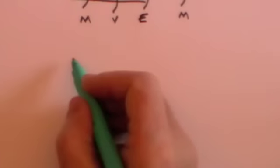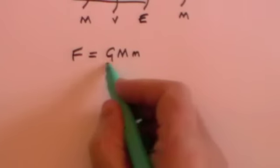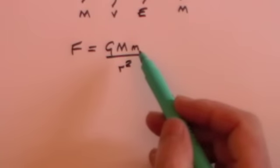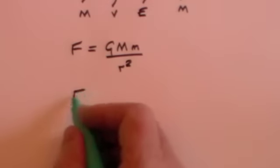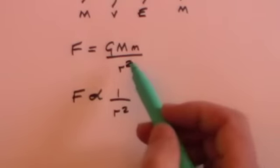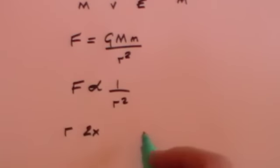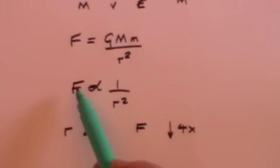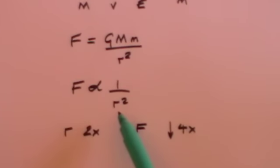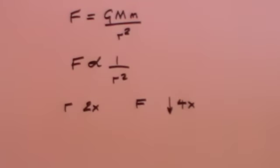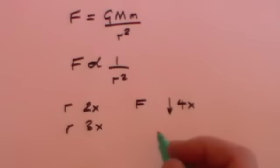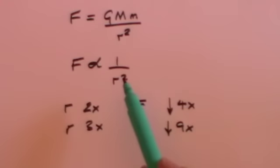I just want to remind you again of that formula you don't need to know: F is equal to G times mass of the Sun times mass of the Earth divided by r squared — but that m can be the mass of any planet. You'll notice that the force is proportional to 1 over r squared, because you've got r squared at the bottom. That's what's called an inverse square law — inverse square because you've got the inverse of the radius and it's squared. So notice what happens: if the radius doubles, then the force will go down by fourfold. If the radius triples, then the force will decrease ninefold, because it decreases according to the square.